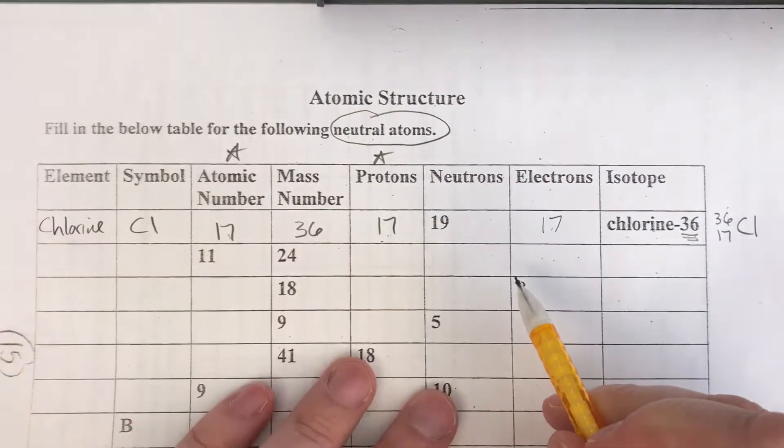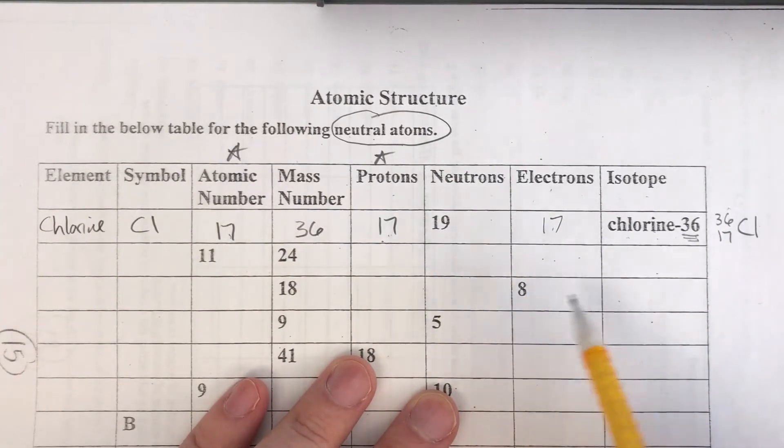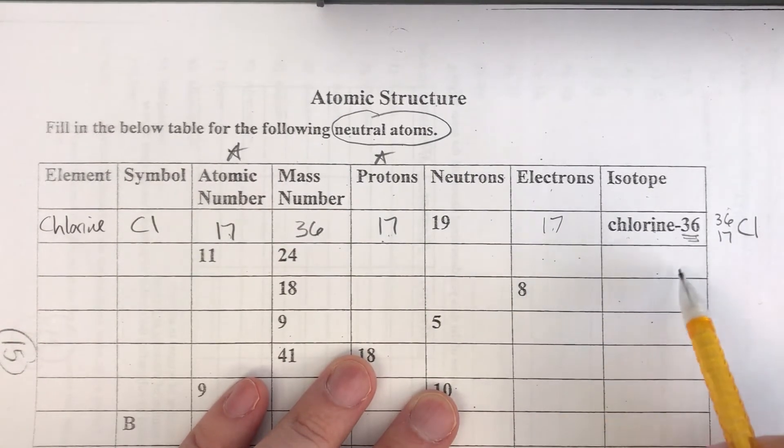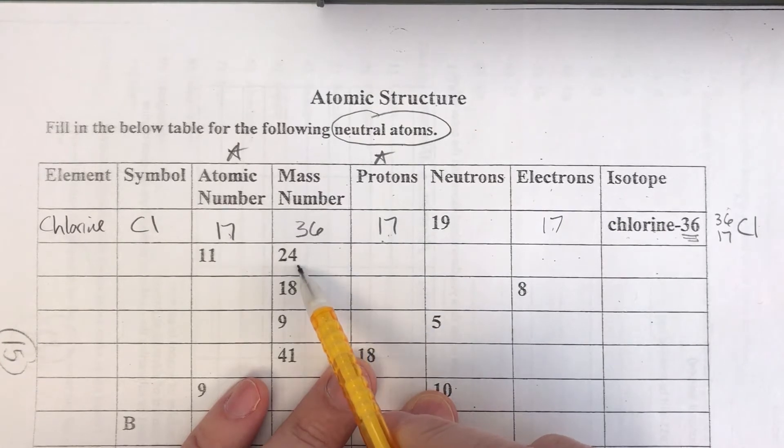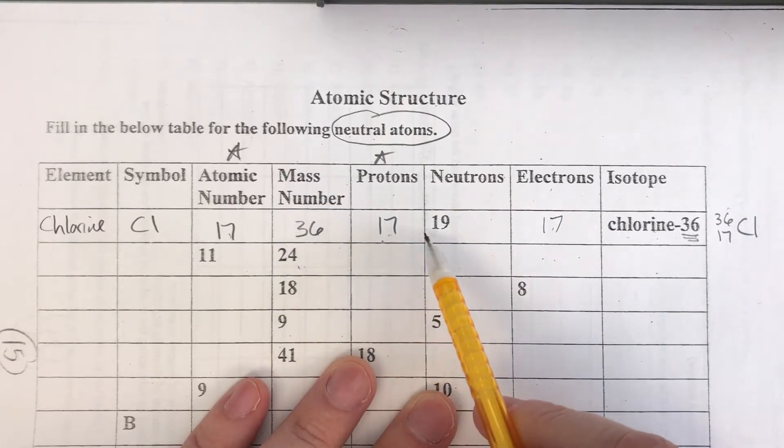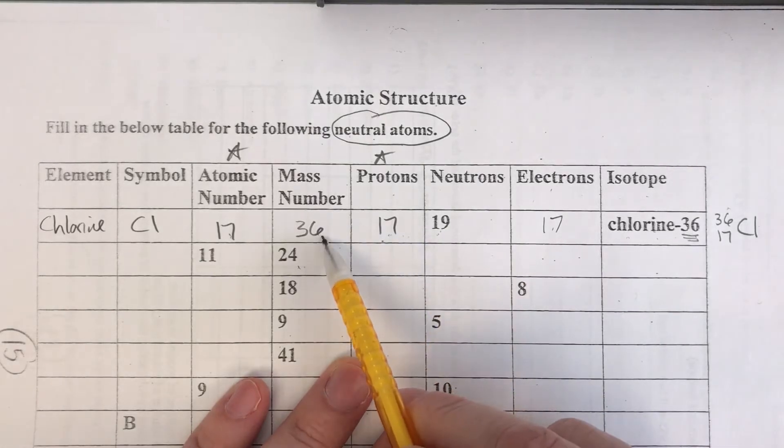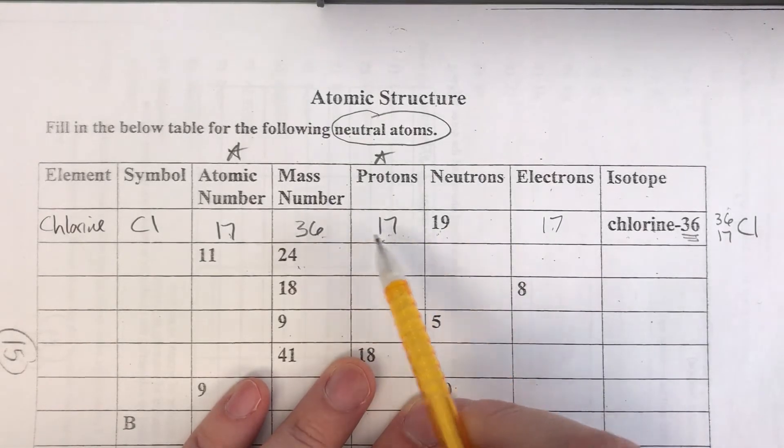Now one of the things that you want to look at in order to calculate some of these things, especially like if I look down here I don't know what the mass number is but I see that the mass number is over here. The mass number is always the protons and neutrons added up together.